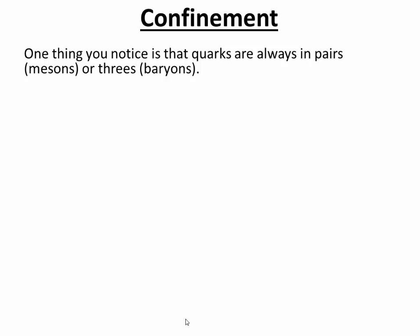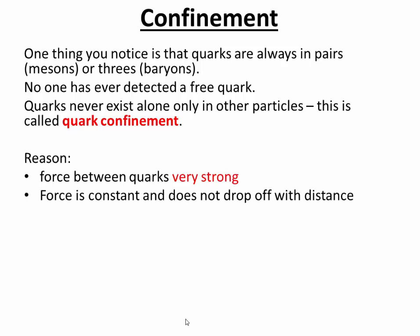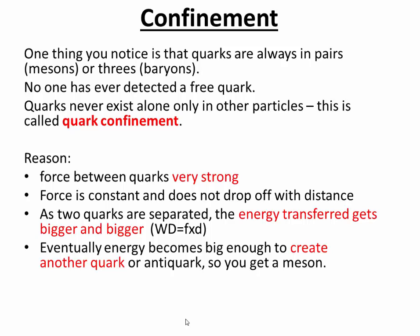You need to know about confinement. Quarks are always in pairs or in threes — no one has ever detected a free quark. Quarks never exist alone, only in other particles such as baryons and mesons. This is called quark confinement. The force between quarks is incredibly strong and basically constant — it does not drop off with distance. So as two quarks are separated, the energy needed to pull them apart gets bigger and bigger, because work done is force times distance. Eventually, the energy becomes so great it can be used to create another quark using Einstein's equation E = mc², so you would get another quark or anti-quark, forming a meson.